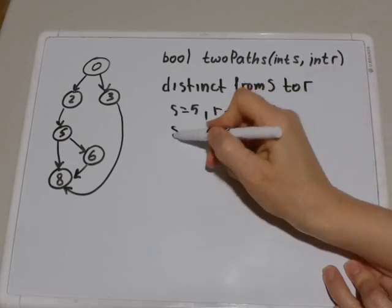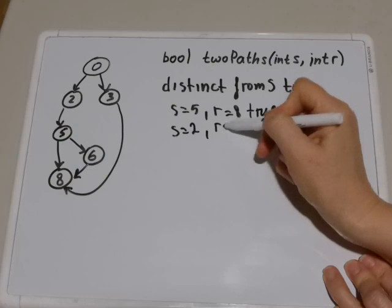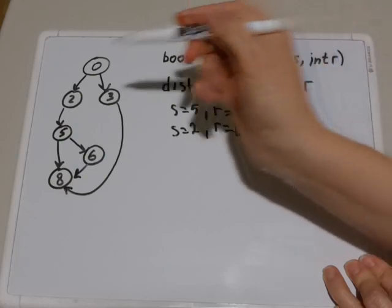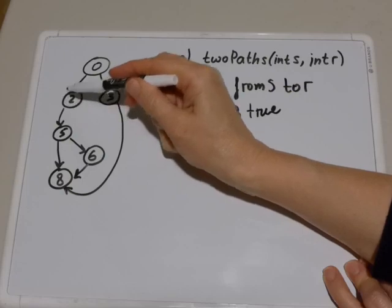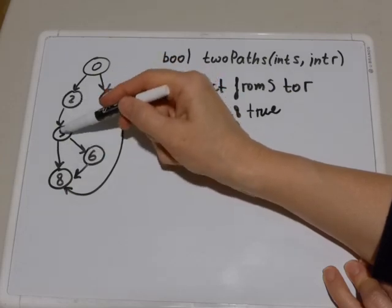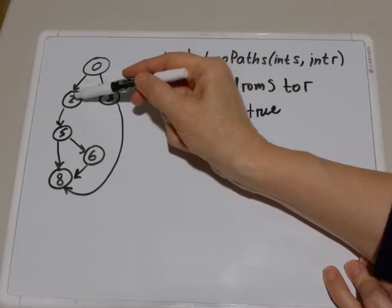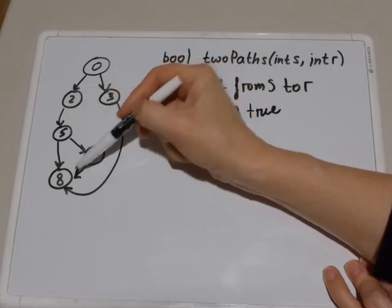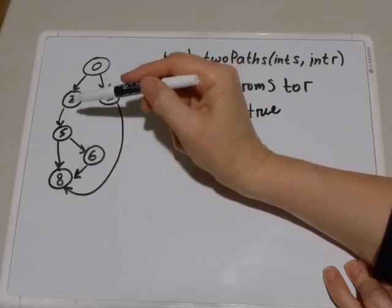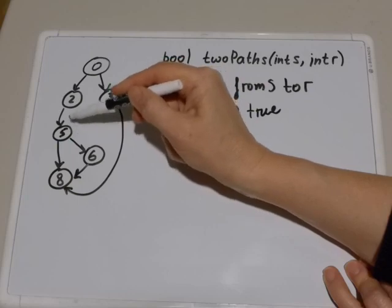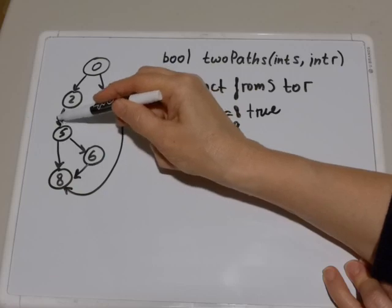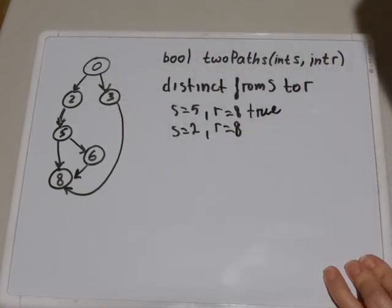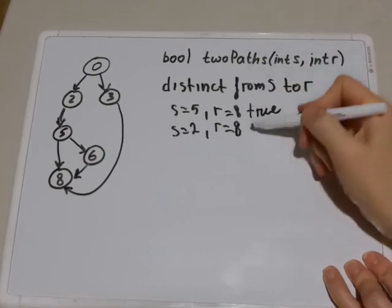However, if I take s equals 2 and r equals 8, even though there are two paths from 2 to 8—2, 5, 8 is one path and 2, 5, 6, 8 is another path—these paths are not distinct because they share this one single edge from 2 to 5. Because they share this edge, they are not distinct, so your algorithm will return false.